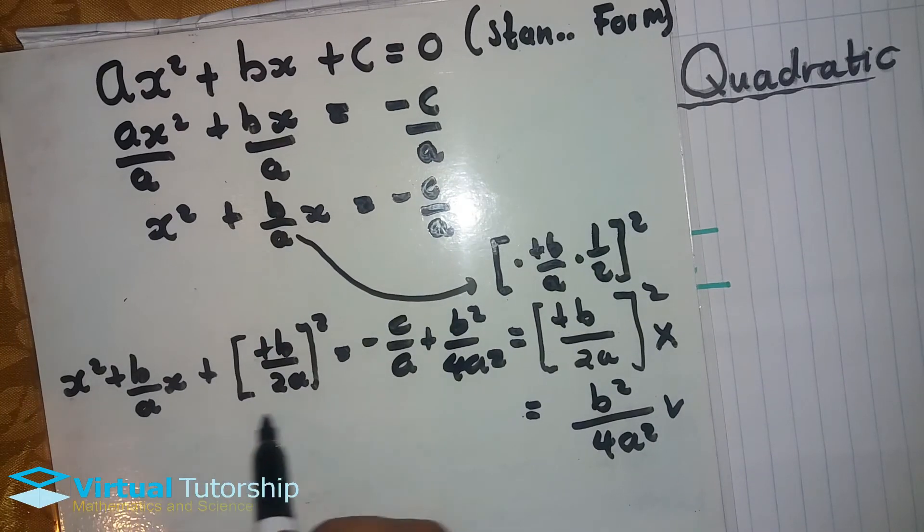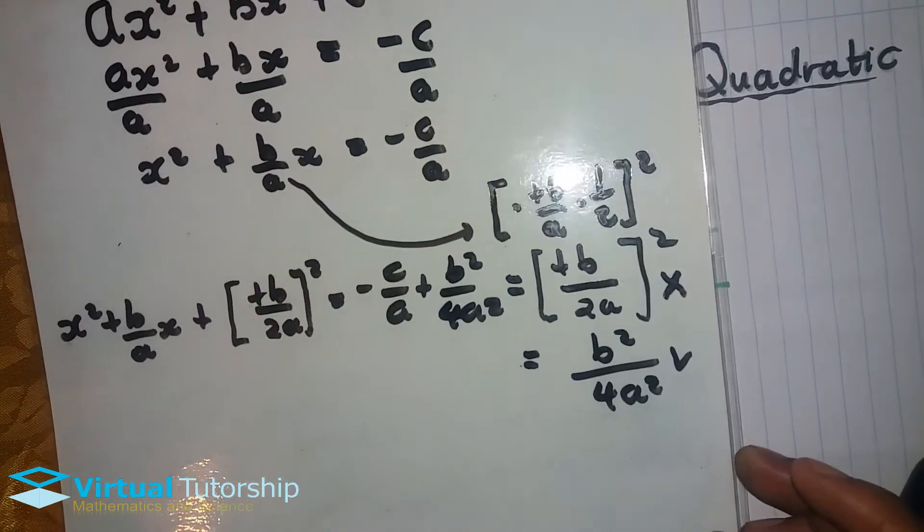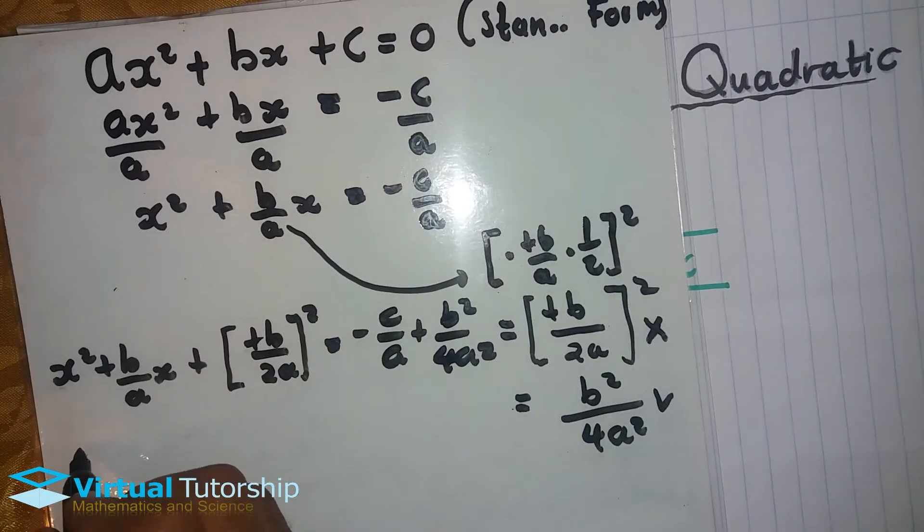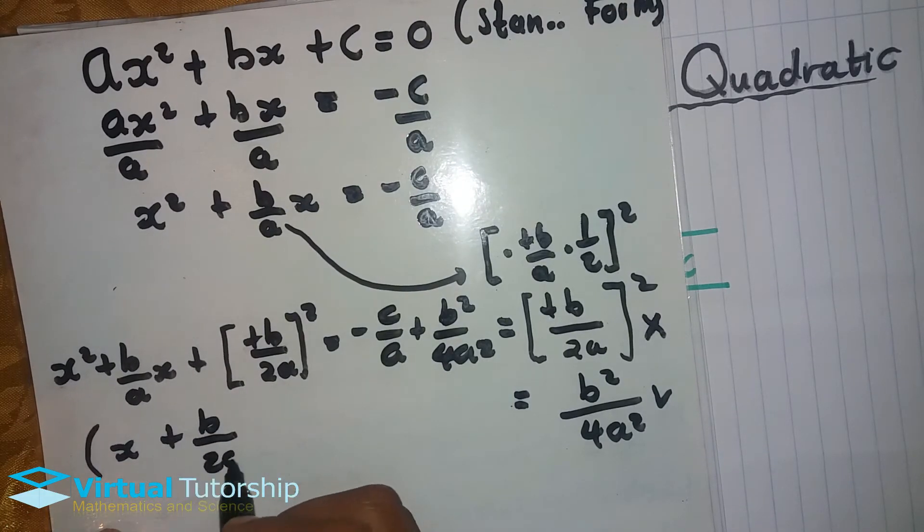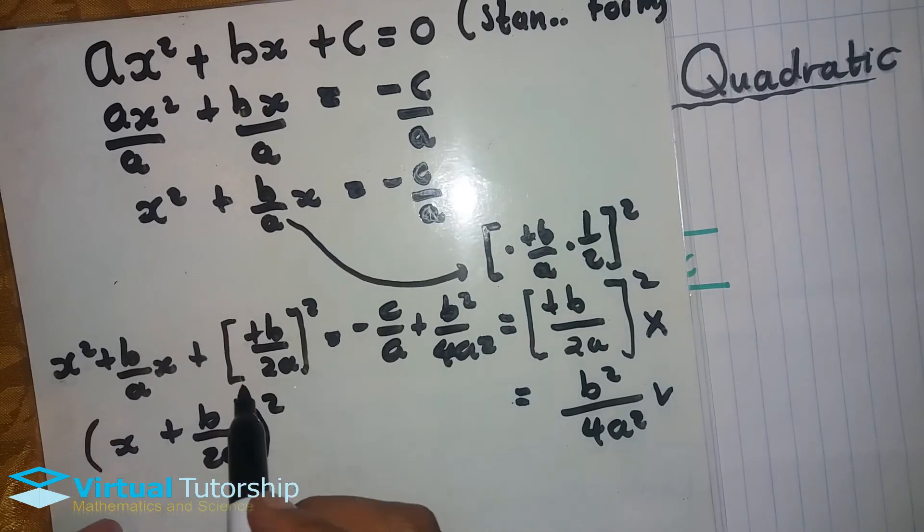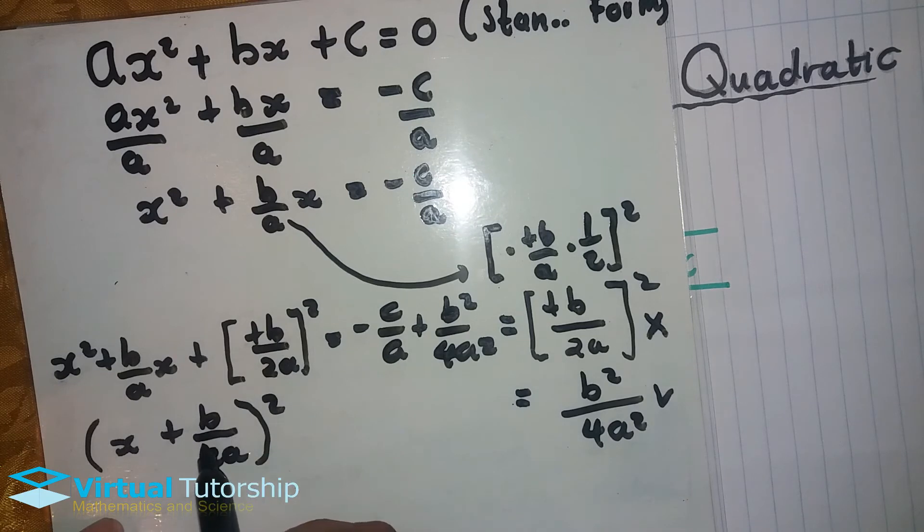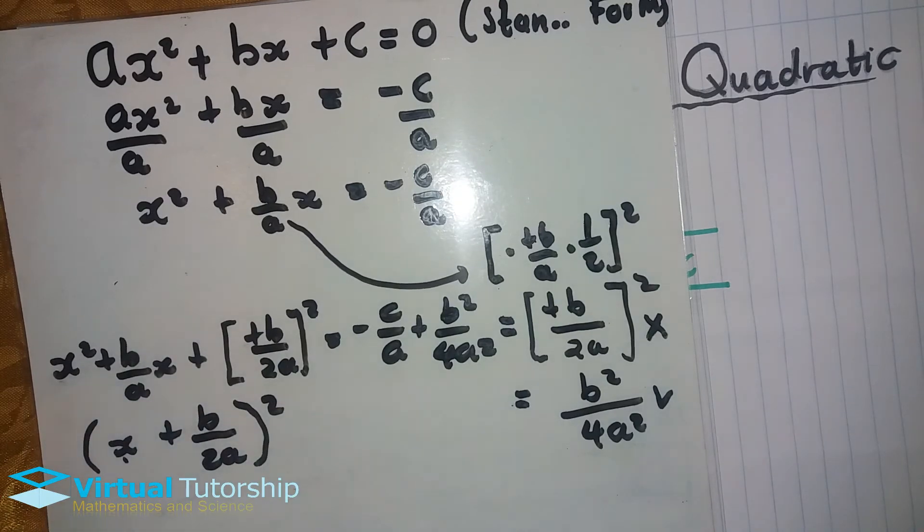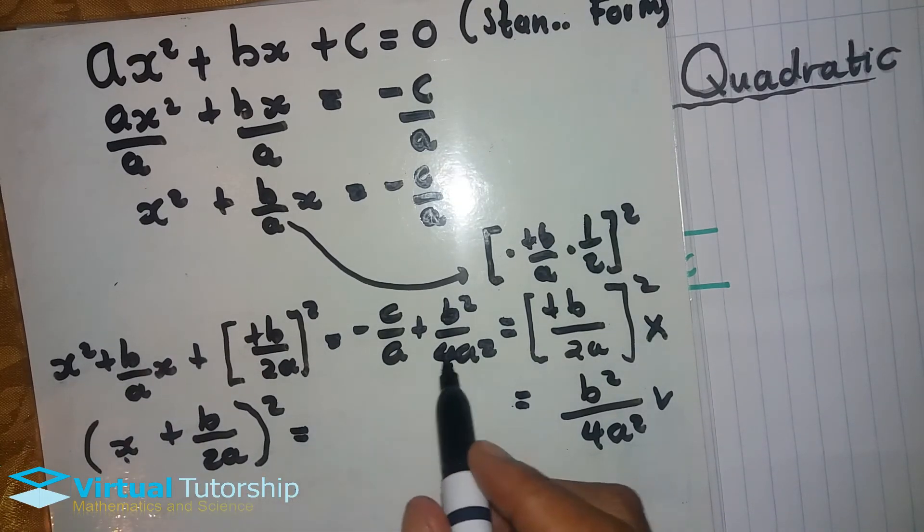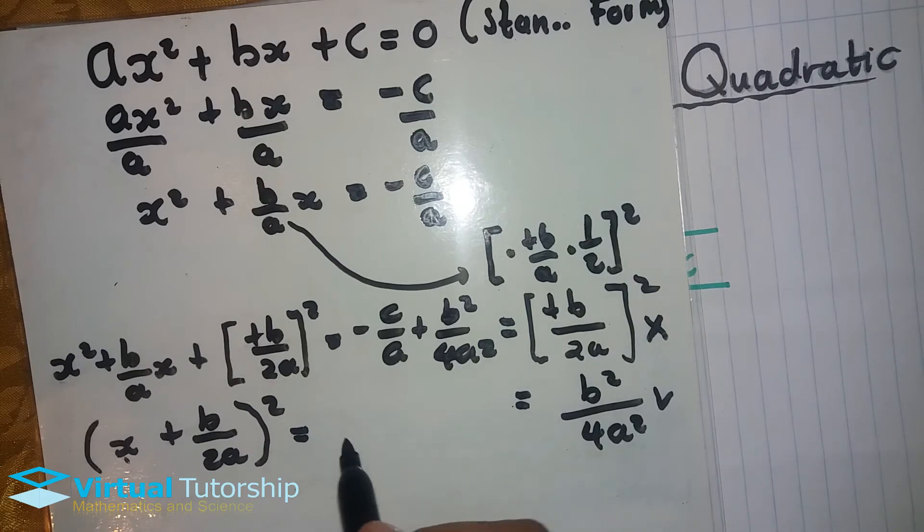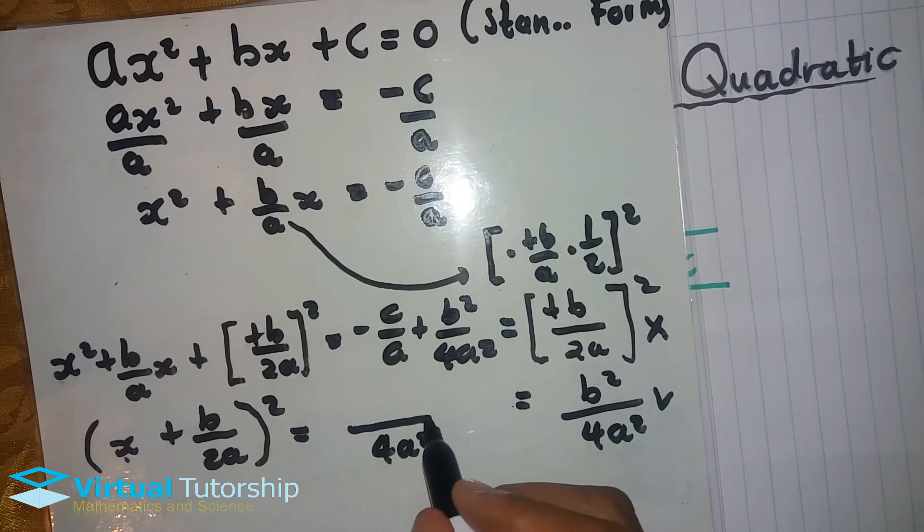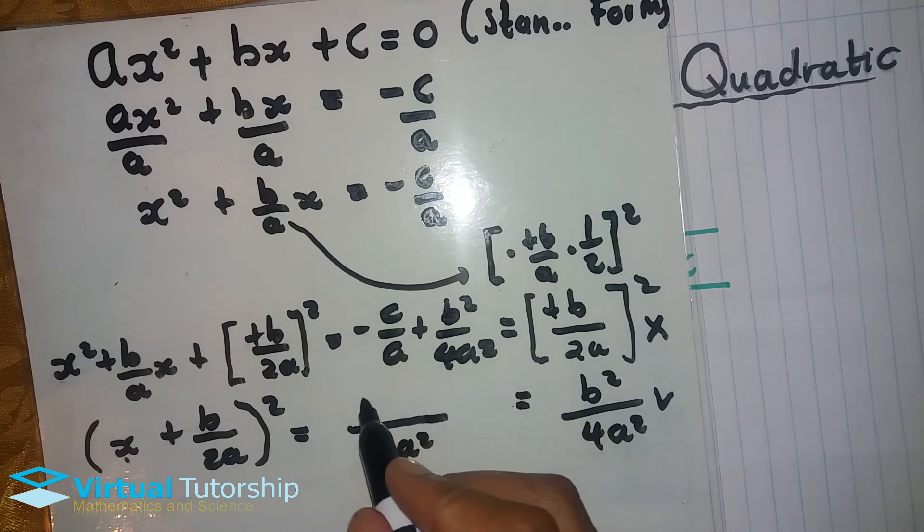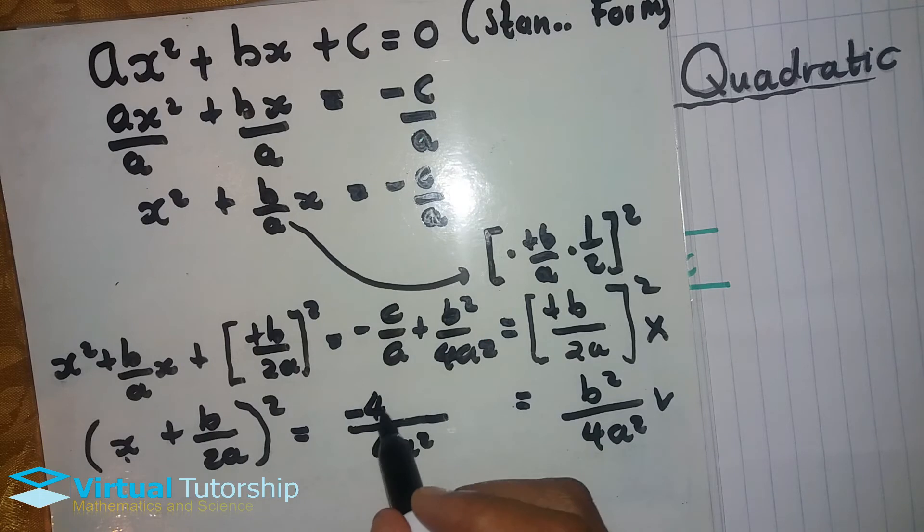On the left hand side, a perfect trinomial: (x + b/2a)². And then on the right side, finding the LCD of these two fractions, which is 4a². After multiplying these terms, we get -4ac + b² over 4a².